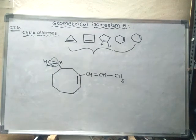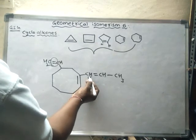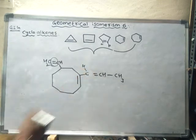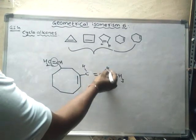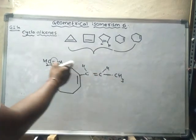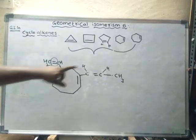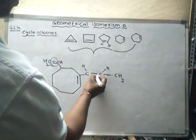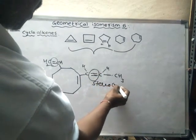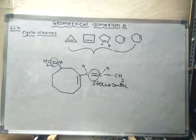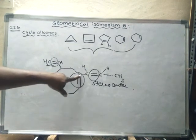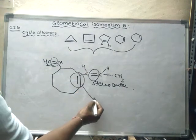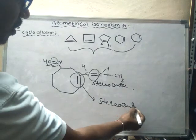For the CH=CHCH3 double bond outside the ring: this carbon has hydrogen and a different group; the other carbon also has hydrogen and another group. These two groups are different from each other, so this center is a stereocenter — geometrical isomerism is possible here.